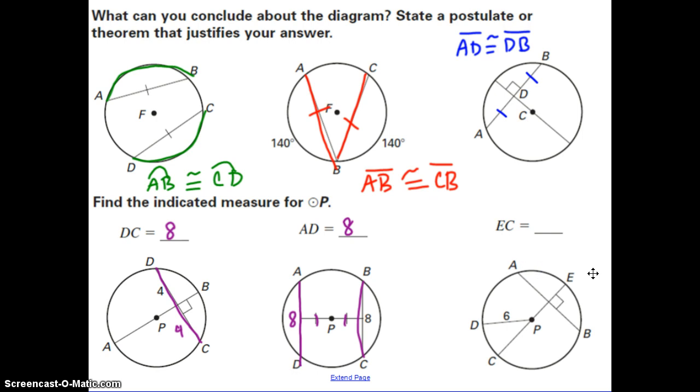This last one isn't really using any of the theorems that we talked about today. But it does bring in your understanding of the radius and diameter of a circle. It's asking for the length of EC. And this is a chord that goes all the way through the center, which makes it a diameter. Now, this segment, the only measurement we have is DP. And that's 6.